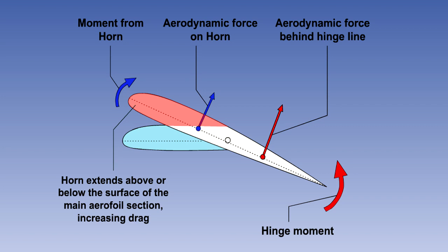Design of the horn balance will mean that during operation, the horn extends above or below the surface of the main aerofoil section. This will cause an increase in drag. Horn balance is commonly found on rudders and elevators.